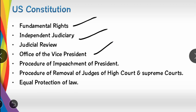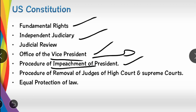Also from the US Constitution, we take the office of the Vice President. The Vice President serves as the chairman of the Rajya Sabha. We also take the procedure of impeachment of the President from the US Constitution. Additionally, equal protection of law — meaning every person is equal before the law — is taken from the US Constitution.